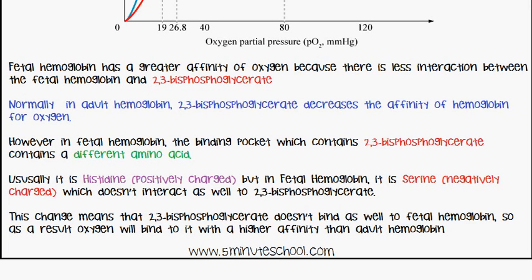Normally in adult hemoglobin, 2,3-bisphosphoglycerate decreases the affinity of hemoglobin for oxygen. However, in fetal hemoglobin, the binding pocket which contains 2,3-bisphosphoglycerate contains a different amino acid.